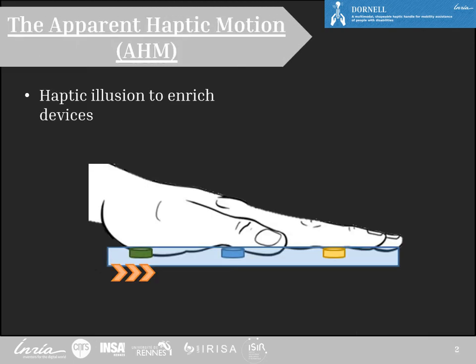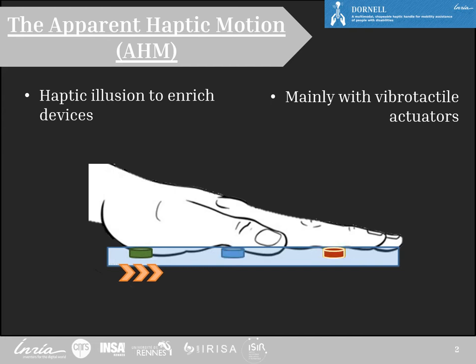The apparent haptic motion is one of the numerous tactile illusions used to enrich devices and transmit messages. This illusion consists of the asynchronous activation of discrete stimulation points with vibrotactile actuators on the skin to convey a sensation of continuous motion.